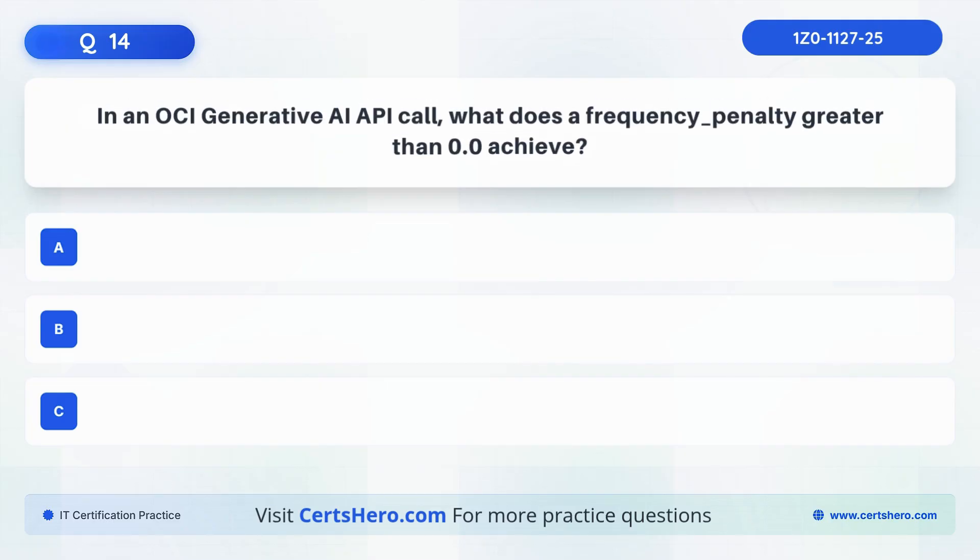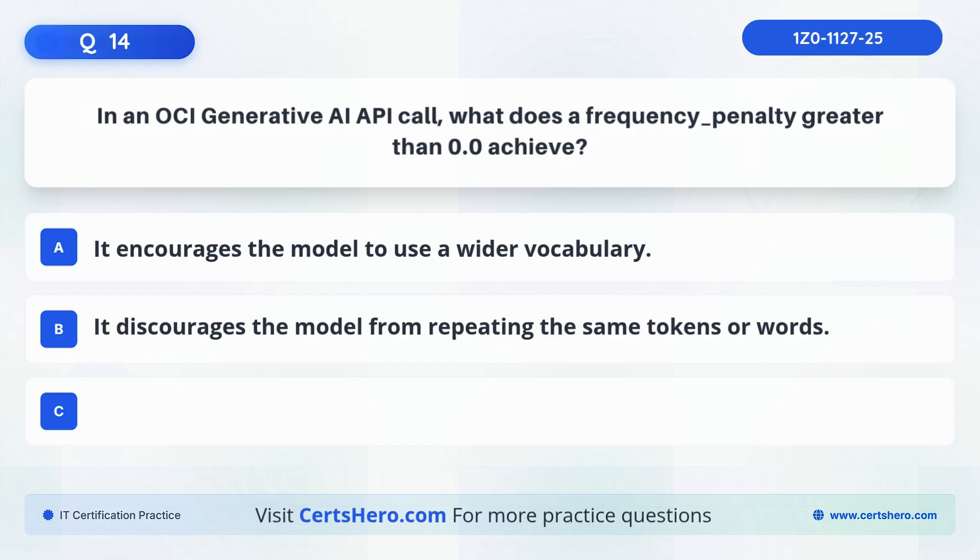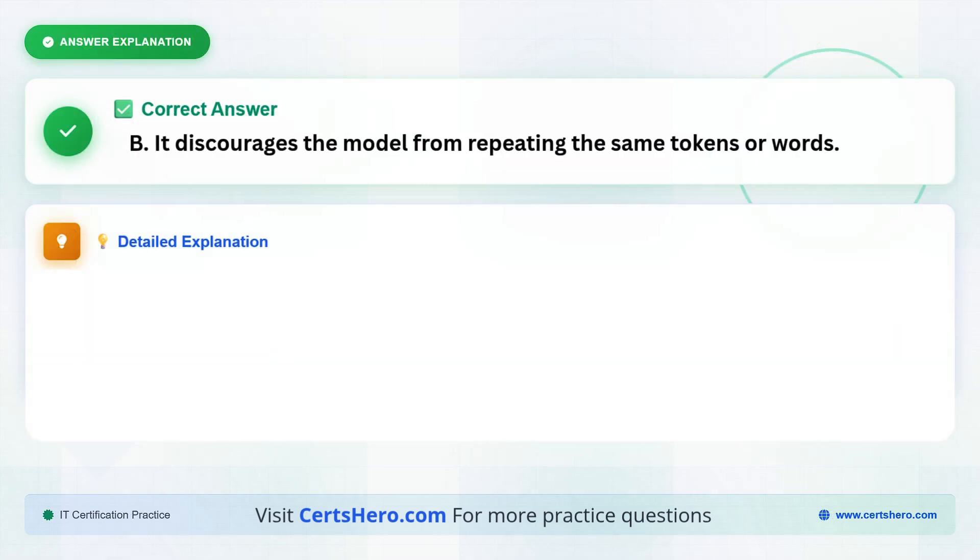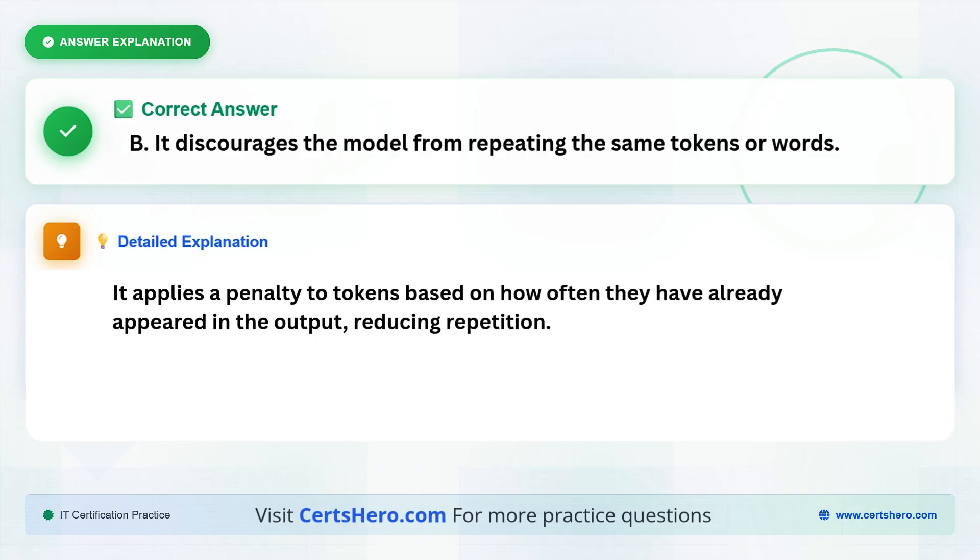Question 14. In an OCI generative AI API call, what does a frequency penalty greater than zero achieve? Does it encourage the model to use a wider vocabulary, discourage the model from repeating the same tokens or words, or make the model's output more factual? The correct answer is B, it discourages the model from repeating the same tokens or words. It applies a penalty to tokens based on how often they have already appeared in the output, reducing repetition.